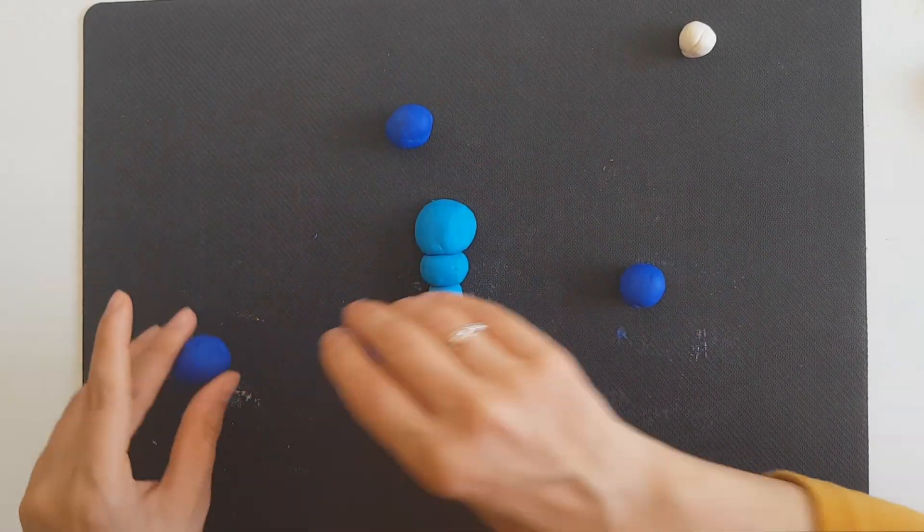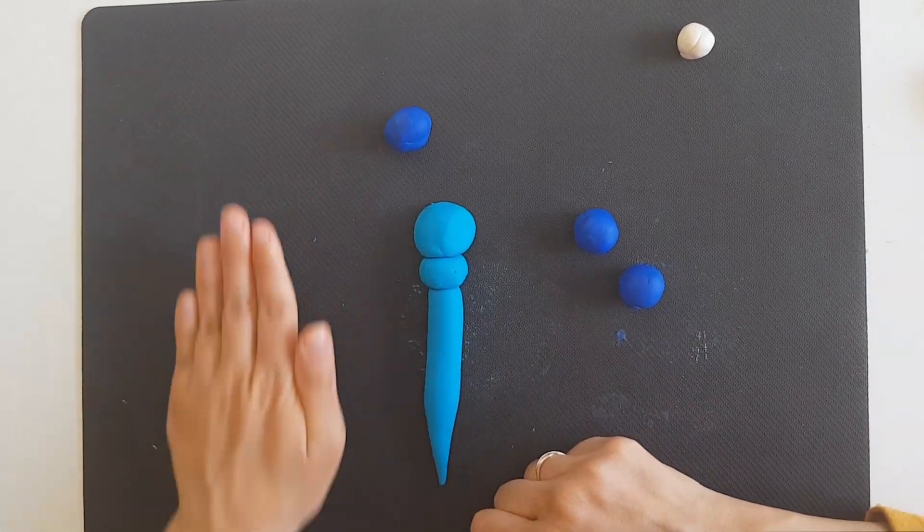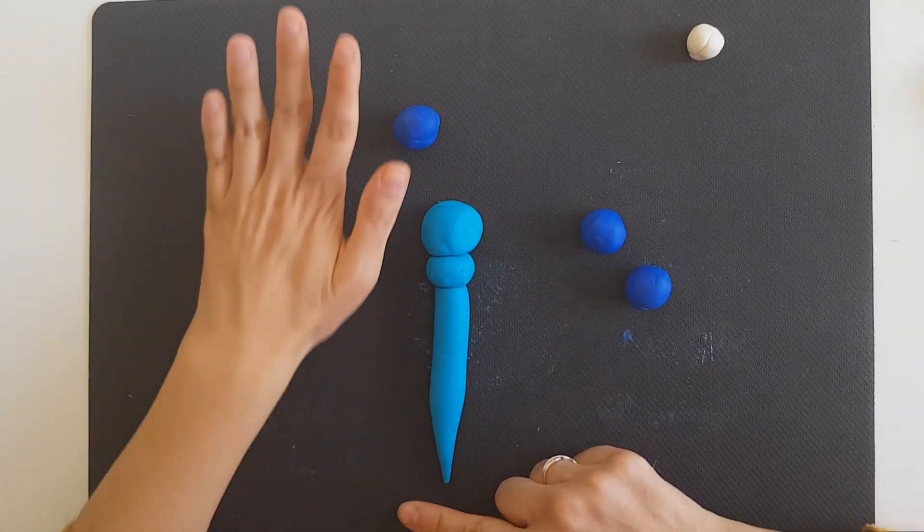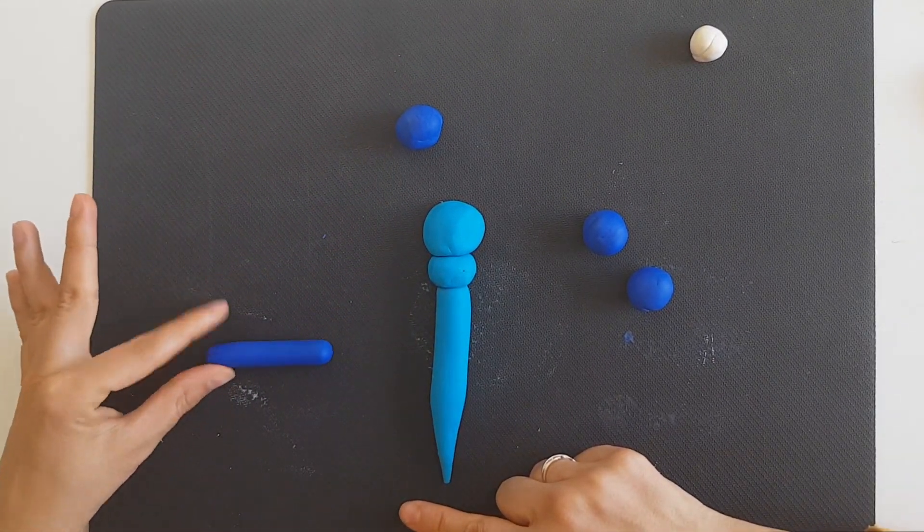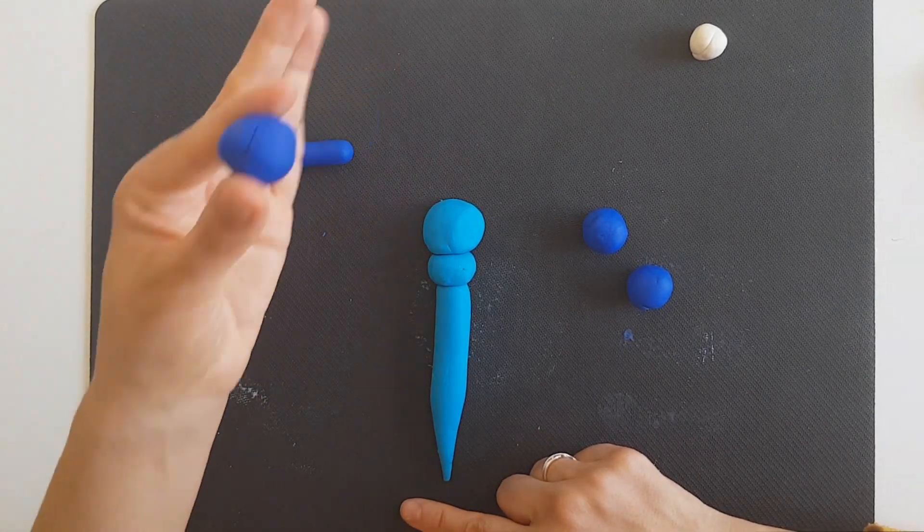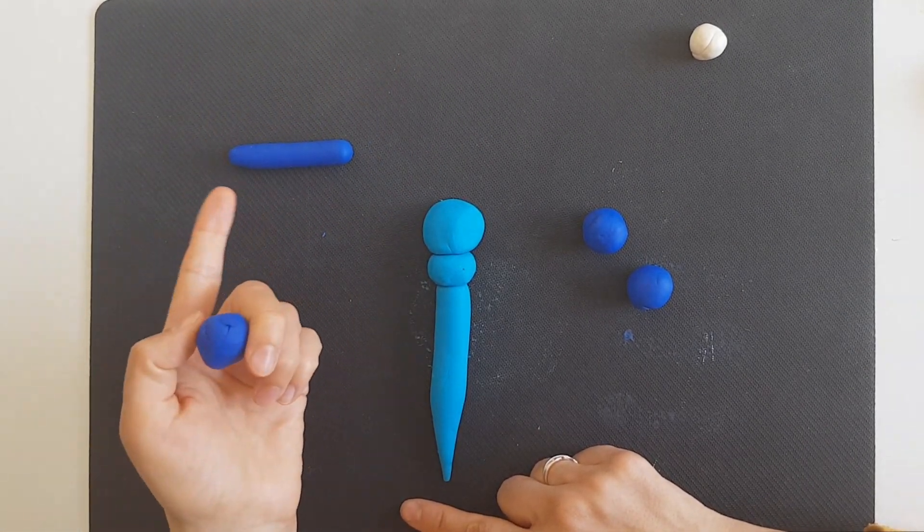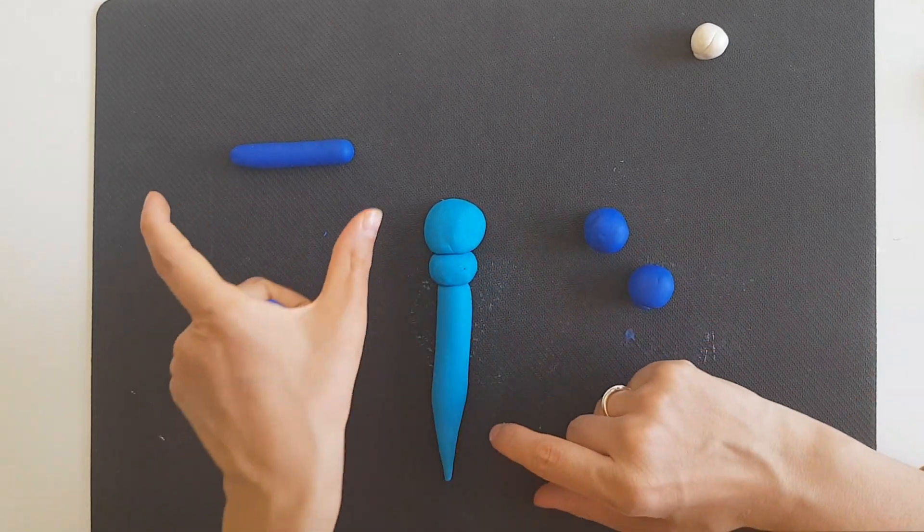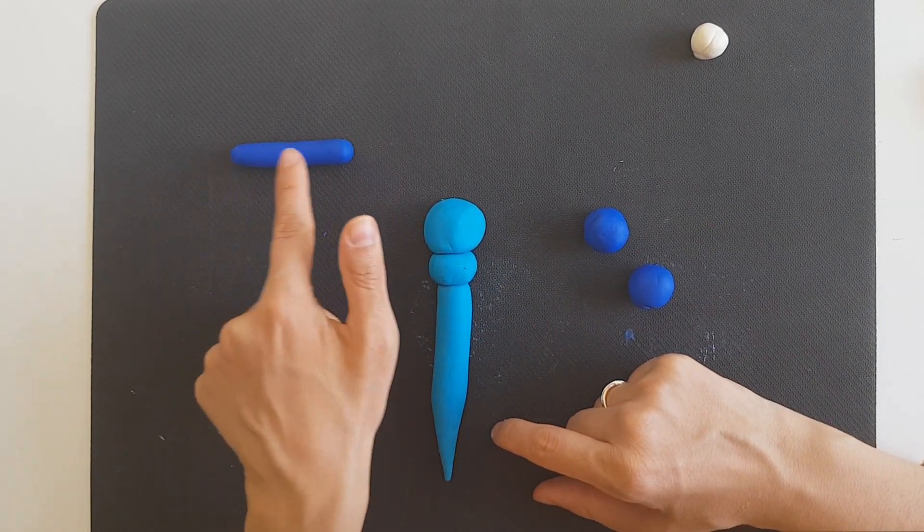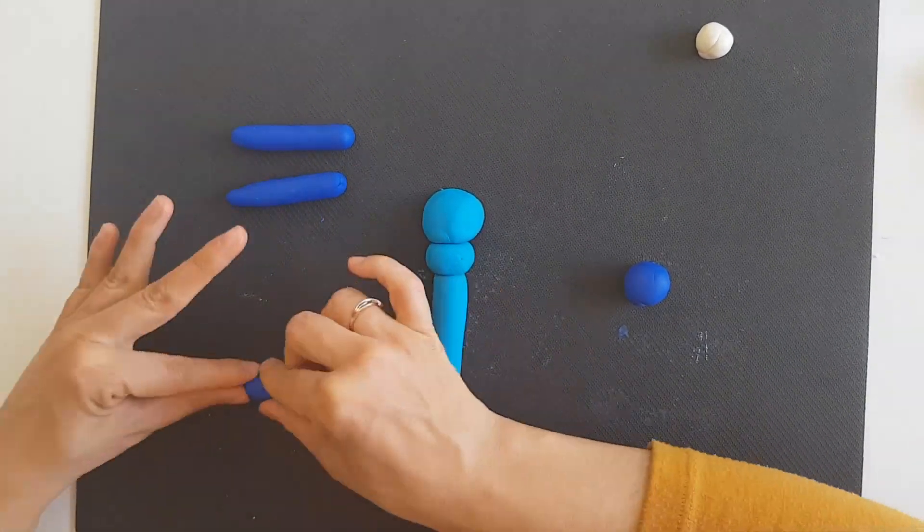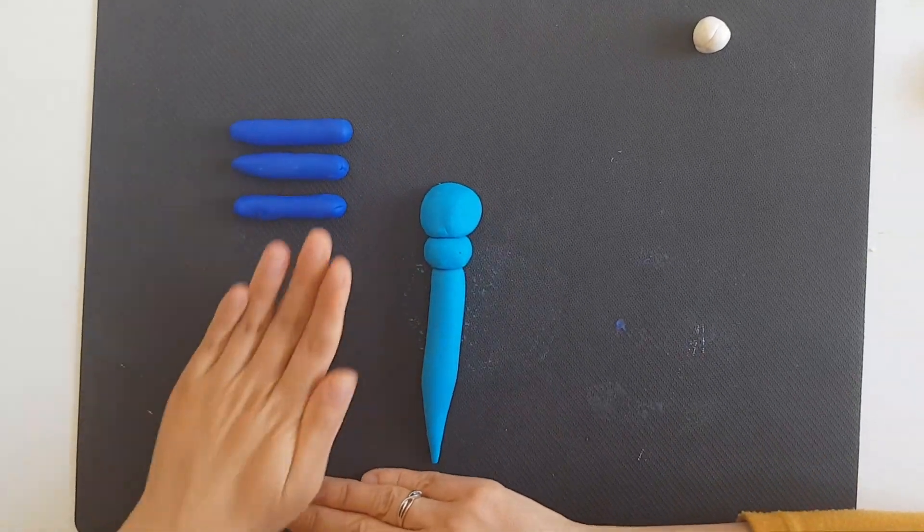And now let's start rolling maybe that much. Try now to make the other balls the same size as that one.